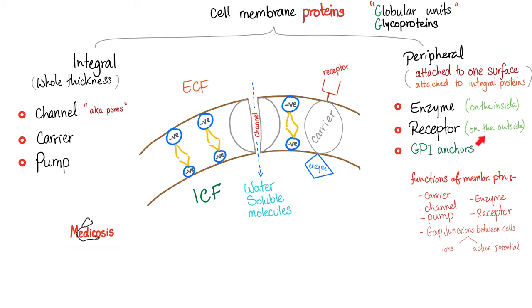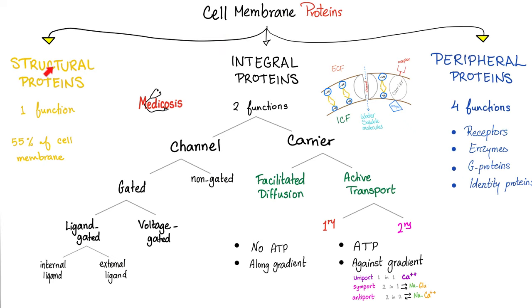In my physiology playlist, we talked about functions of proteins in the cell membrane. Cell membrane proteins are either integral or peripheral. Integral includes the channels, the carriers, the pumps. Peripheral includes enzymes, receptors, GPI anchor proteins. Does anyone remember paroxysmal nocturnal hemoglobinuria? Today, it's time to talk about receptors.